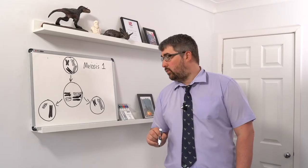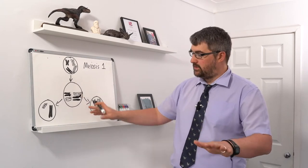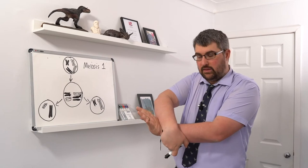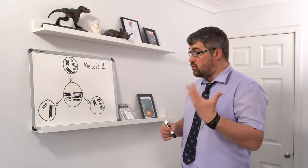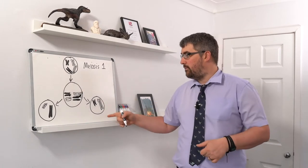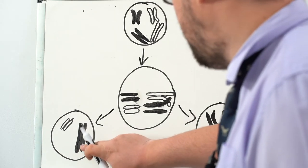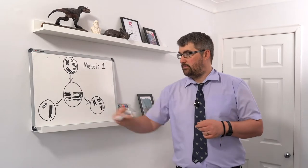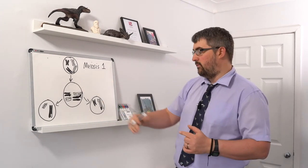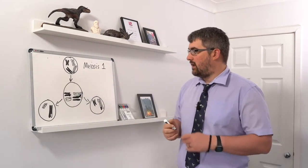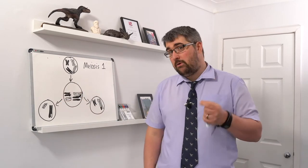Crossing over is where equivalent portions of chromosomes on a homologous pair overlap and swap equivalent portions at the same locus on the chromosome. This produces new, unique chromosomal combinations. For example, we'd end up with a black tip on the base of one chromosome and a white tip on another. The chromosomes are then separated by spindle fibres in anaphase, and by telophase we have two separate nuclei, each with half the original chromosome number.